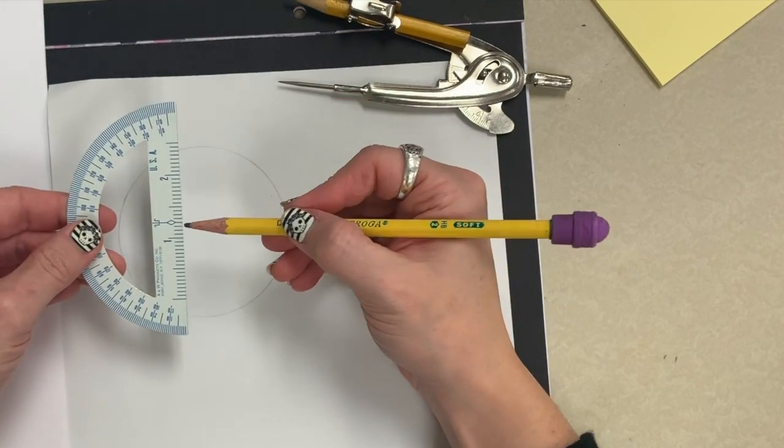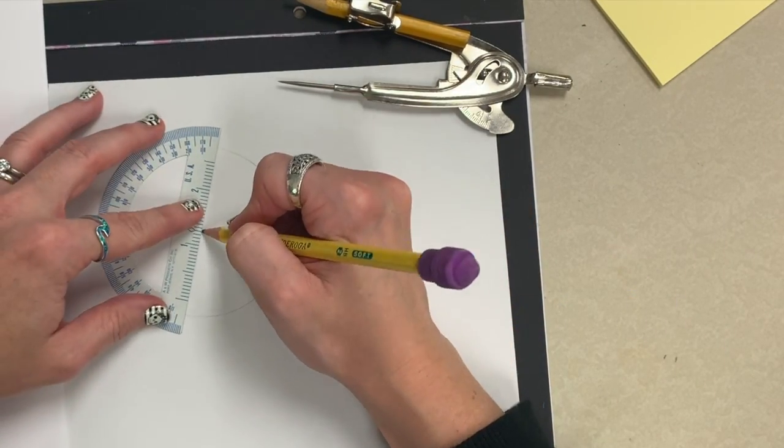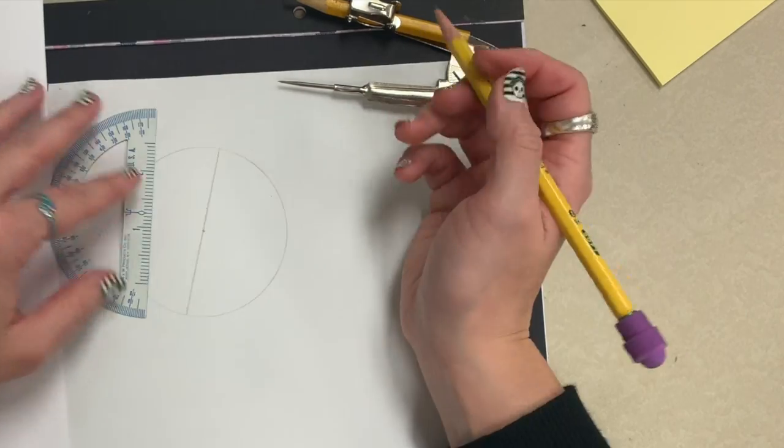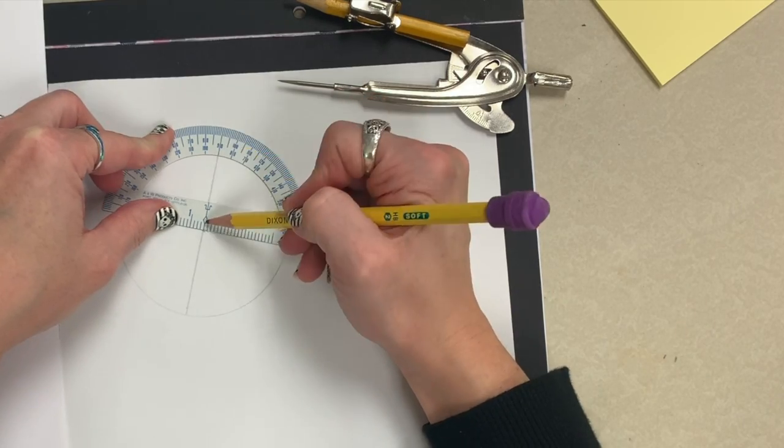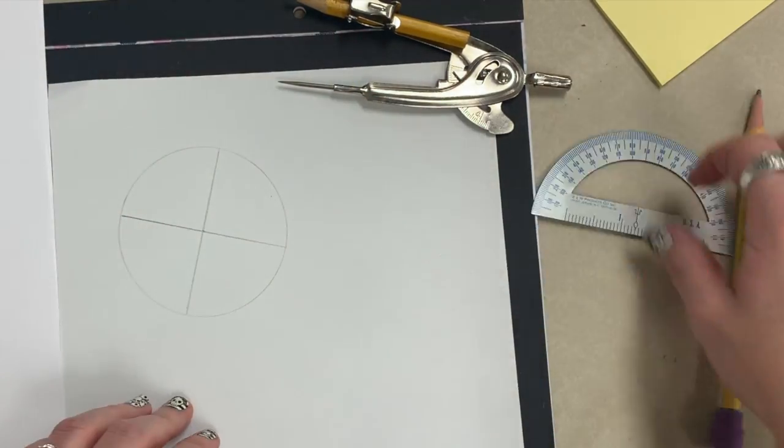Next, we're going to use the protractor to draw the diameter of the circle intersecting with that center where the needlepoint was. Then line the protractor up so that it's at a 90-degree angle to the first one to draw a perpendicular diameter through the center again.